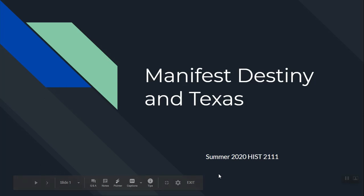Hey, good afternoon. Got a lot of stuff to talk about today. This video might be a little longer than some of the others, and for that I apologize. It's kind of just how this semester goes, but three topics for you today: Manifest Destiny, Texas, and the election of 1860. They all kind of flow together.